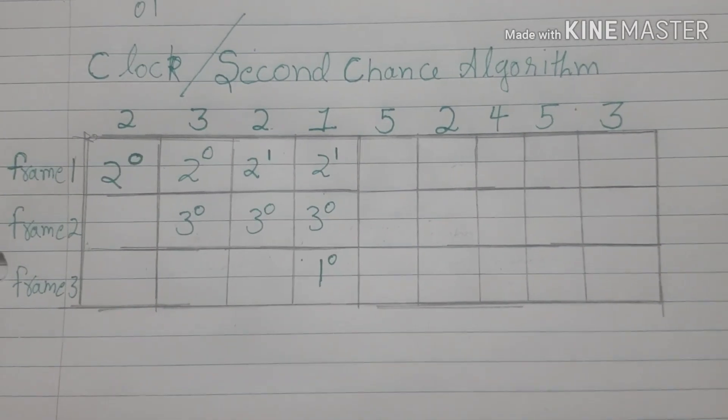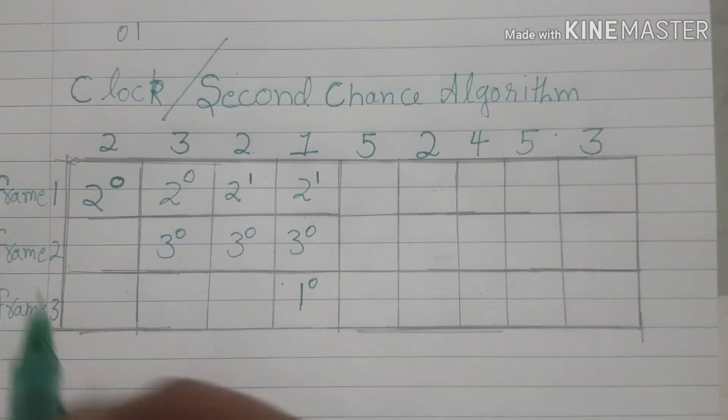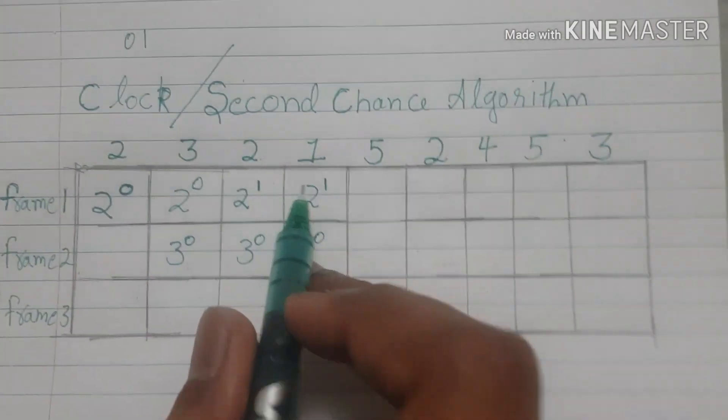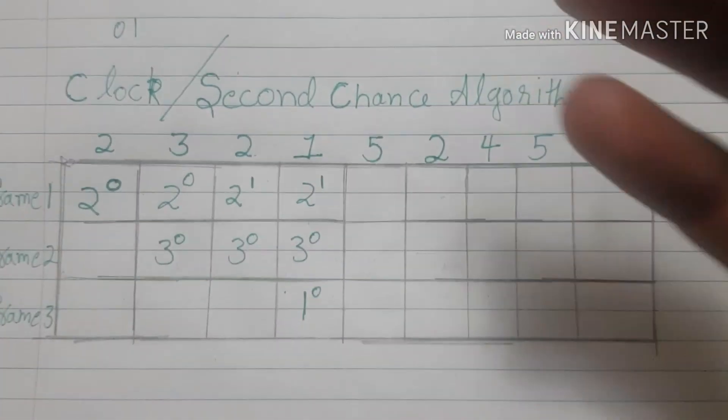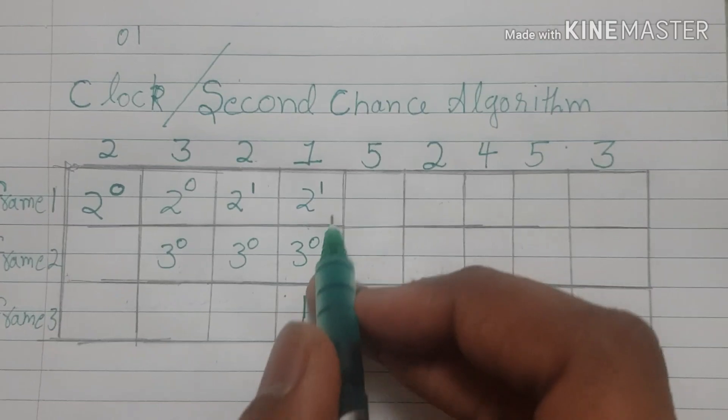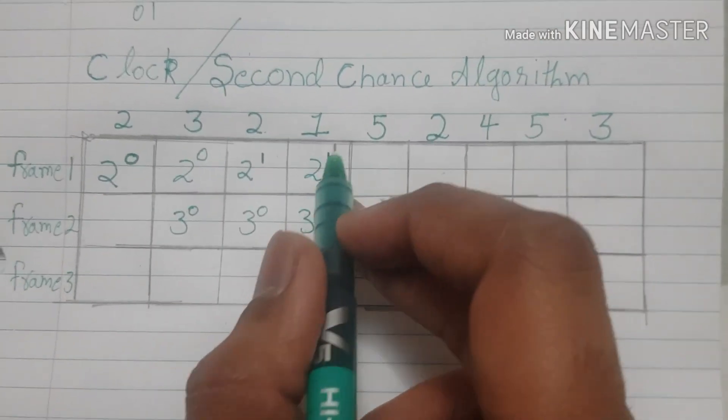According to first in first out, 2 came in first but as I said we have to give it another chance in this algorithm. We give it on the basis of reference bit.